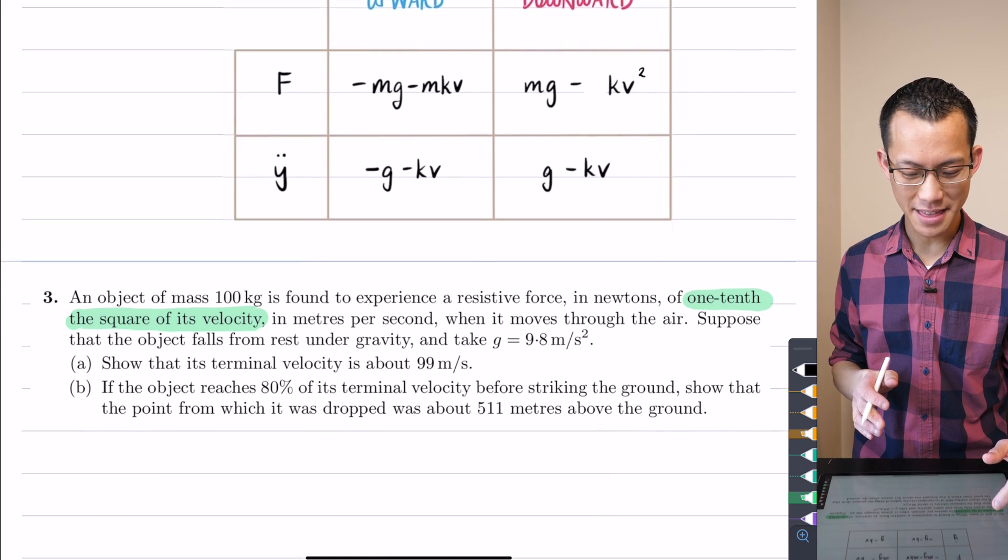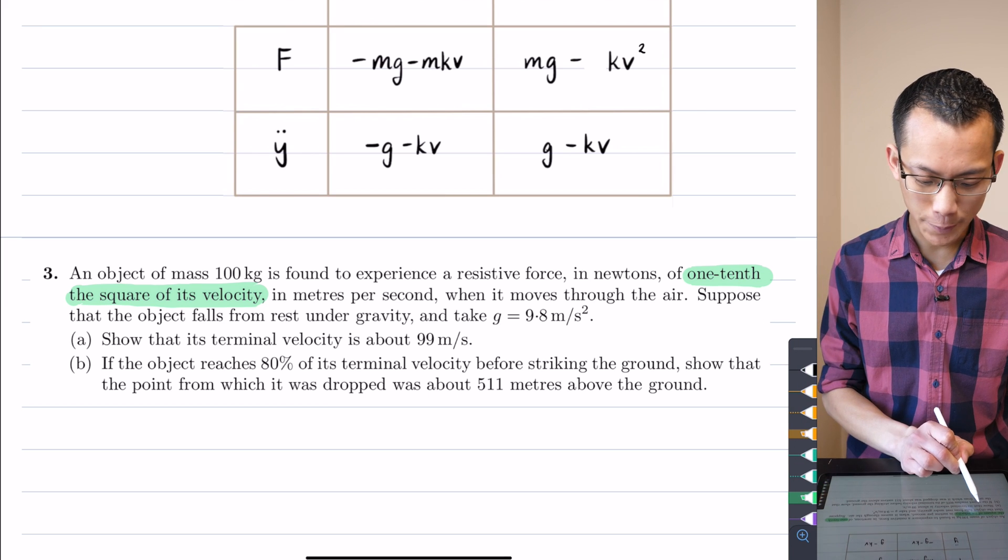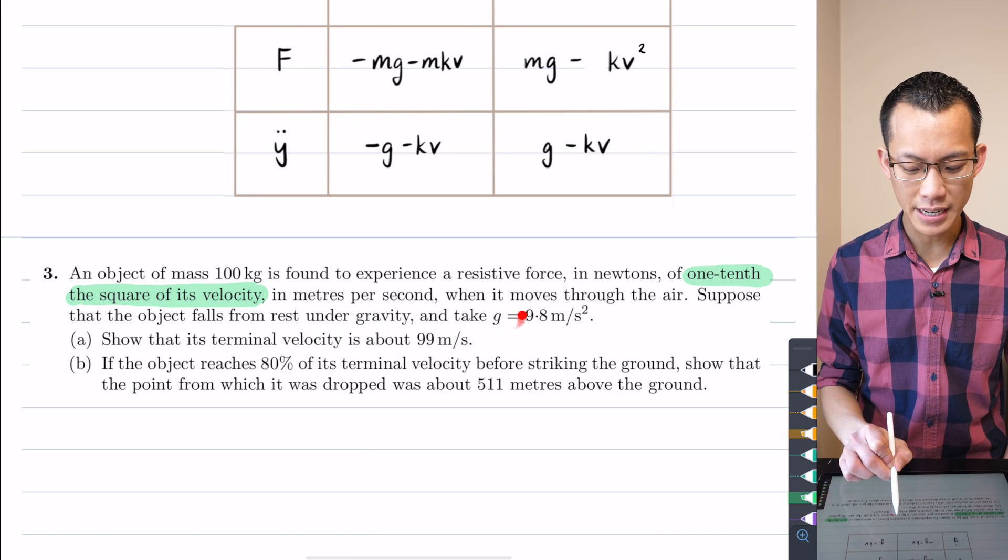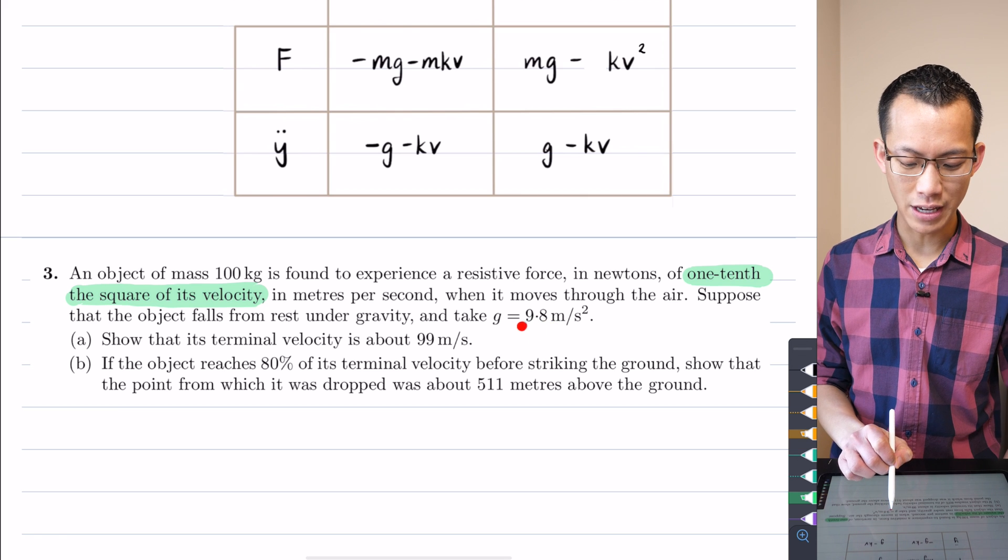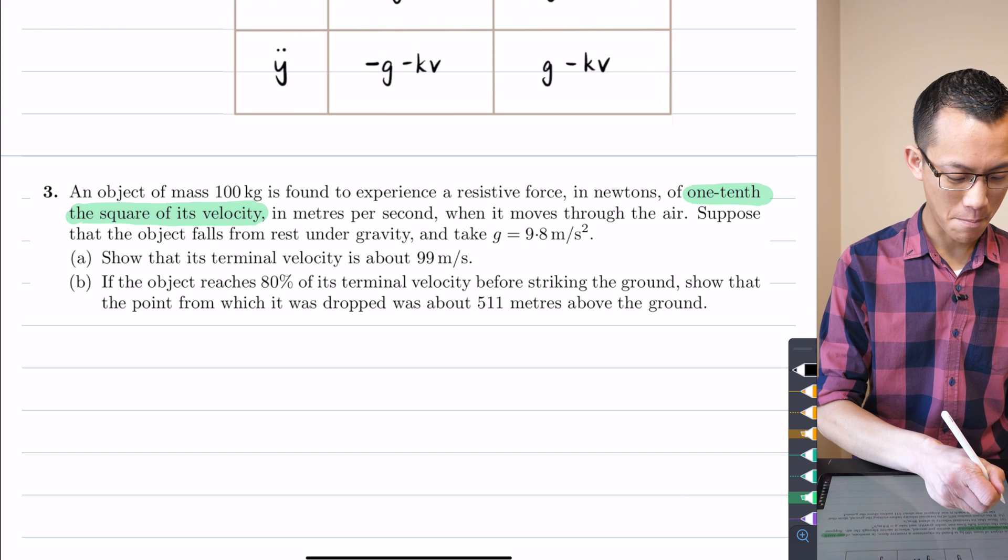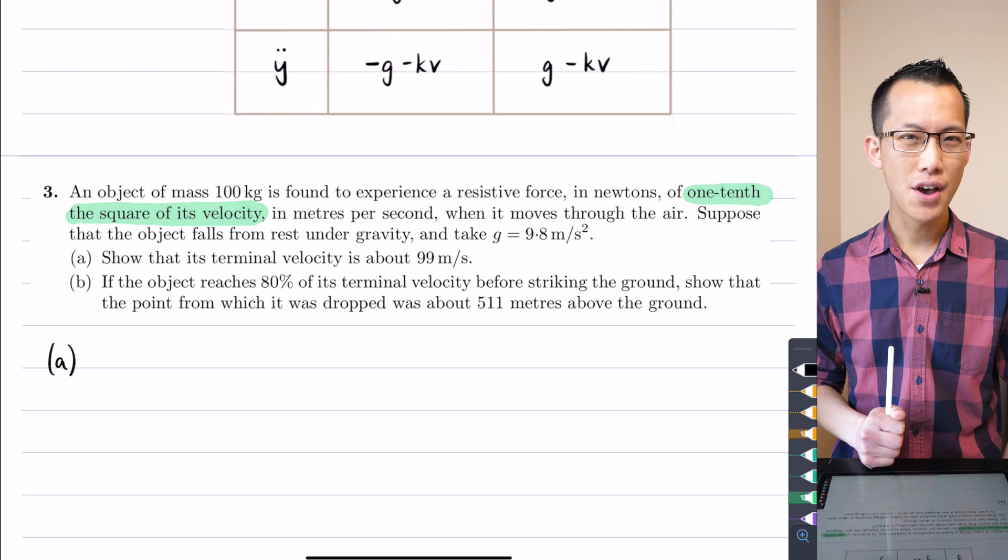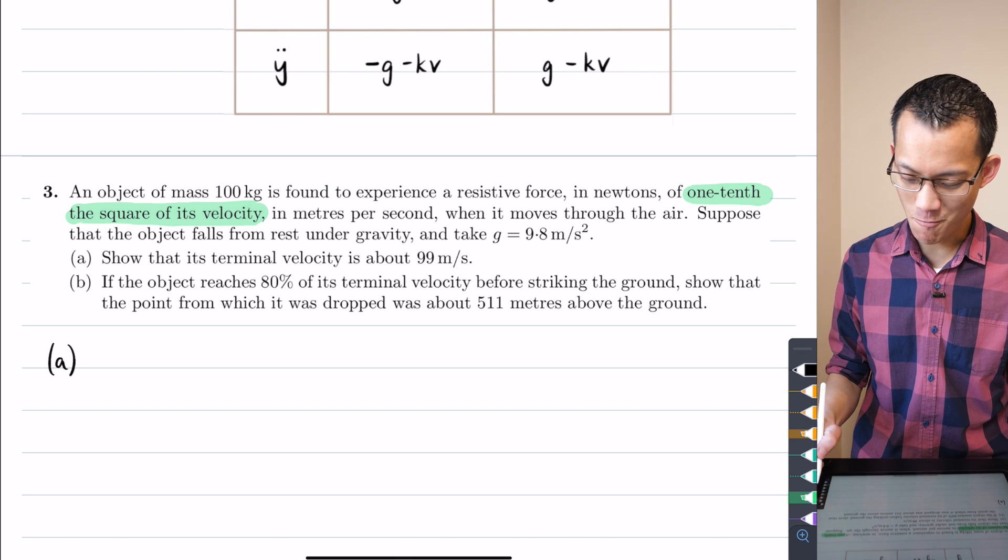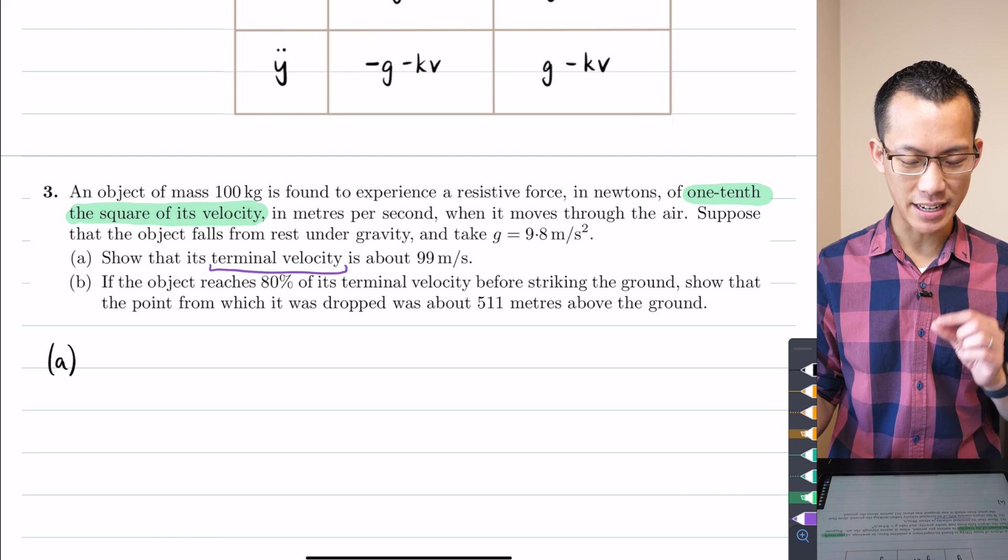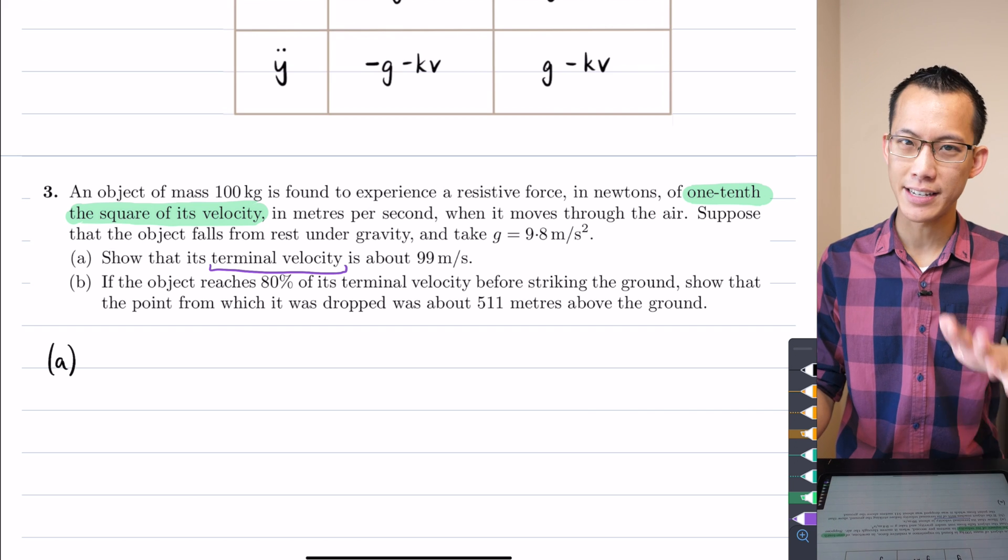So those are two differences. And as we go through the rest of the question, it's going to seem familiar, but if you don't start off with the right equation set up, obviously everything is going to, even no matter how good your working is, you're going to be heading in the wrong direction mostly. So now that we've set that up, let's see what we can make of the rest of the question. It says, as you mentioned before, it's falling from rest under gravity, so it's that downward journey we're talking about, and I'm going to take gravity with this particular value here, 9.8 meters per second per second. Alright, now what do we need to ask? Part A, show that its terminal velocity is about 99 meters per second.